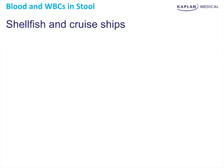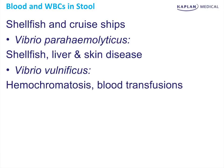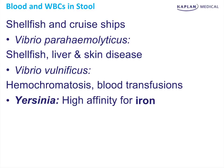When you see shellfish in the history, the answer is most likely Vibrio vulnificus or Vibrio parahemolyticus. Shellfish plus liver and skin disease is Vibrio vulnificus. Liver disease in general — alcoholic cirrhosis, Wilson's disease, hemochromatosis — predisposes you to Vibrio vulnificus, which causes bowel skin lesions. Hemochromatosis and blood transfusions: Yersinia is frequently associated with that because Yersinia grows in cold like blood transfusions and also likes to eat iron.